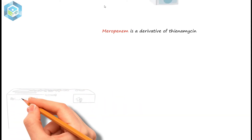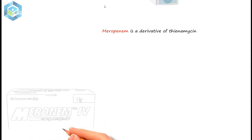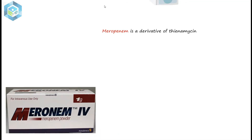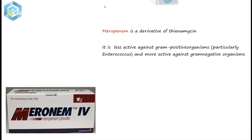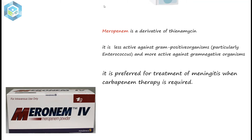Meropenem is a derivative of thienamycin. It does not require co-administration with Cilastatin because it is not sensitive to renal dipeptidase. Compared to Imipenem, it is somewhat less active against gram-positive organisms, particularly enterococci, and more active against gram-negative organisms. Its toxicity is similar to that of Imipenem, except that it may be less likely to cause seizures. This drug is preferred for treatment of meningitis when carbapenem therapy is required.